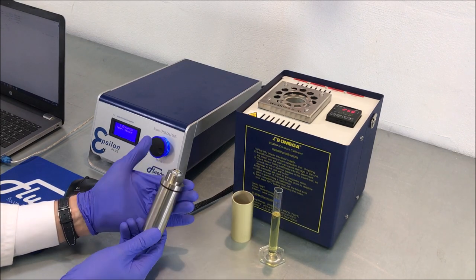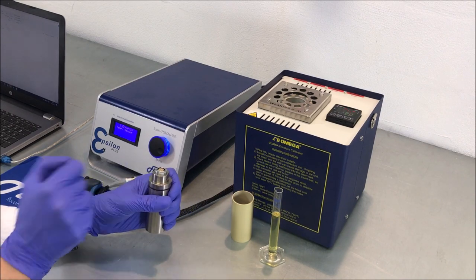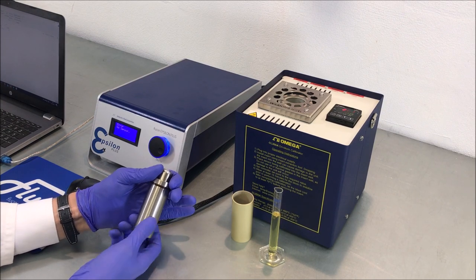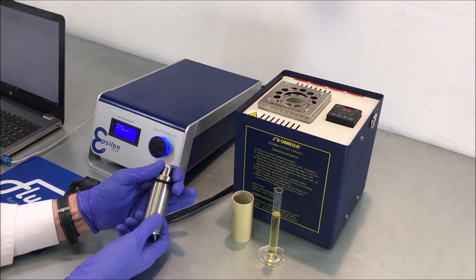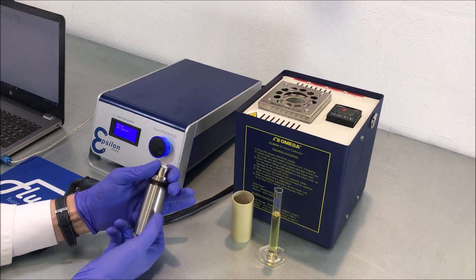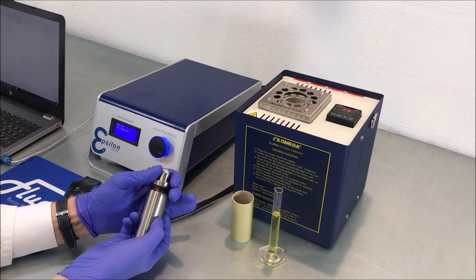Next, you can unscrew the sample cup which also functions as the outer electrode from the sensor head. Be careful with the last turns of the thread and make sure you hold on to the cup once it's loose.